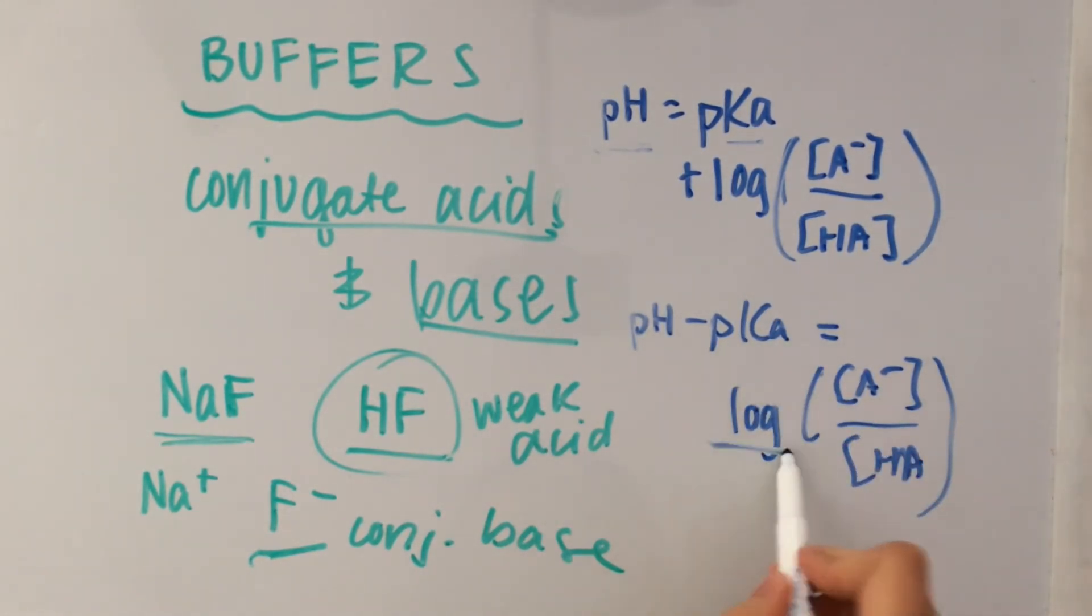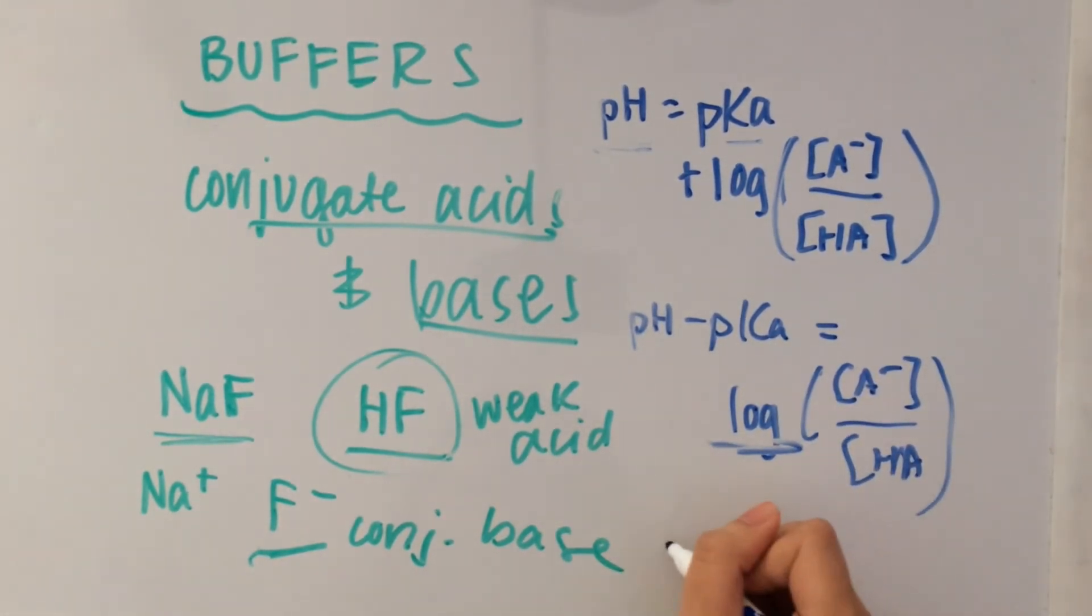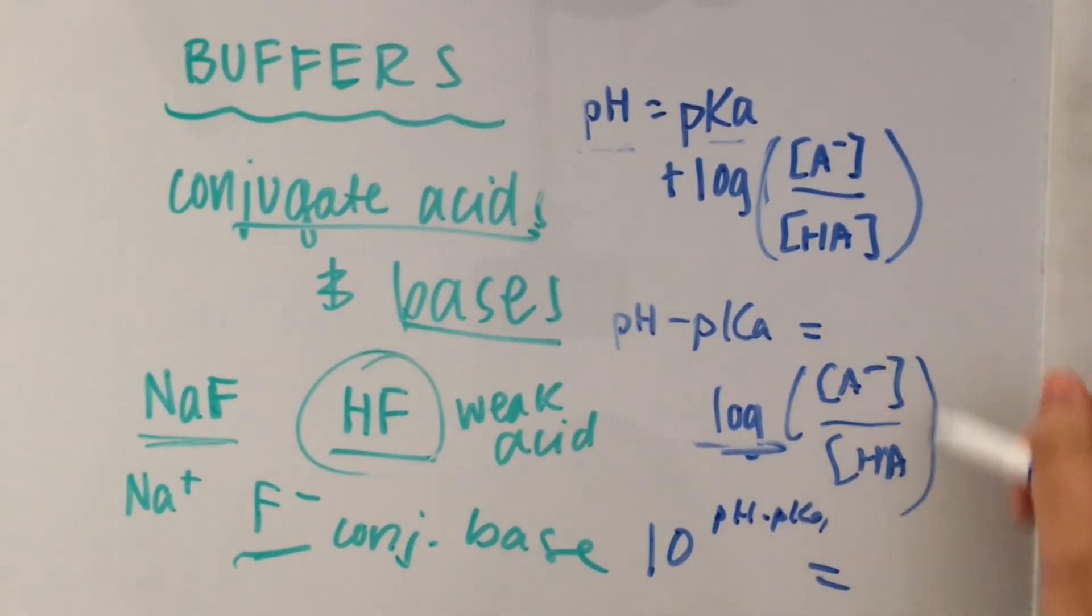And then from there, to get rid of the log, you would just do 10 to the pH minus pKa equals this whole ratio.